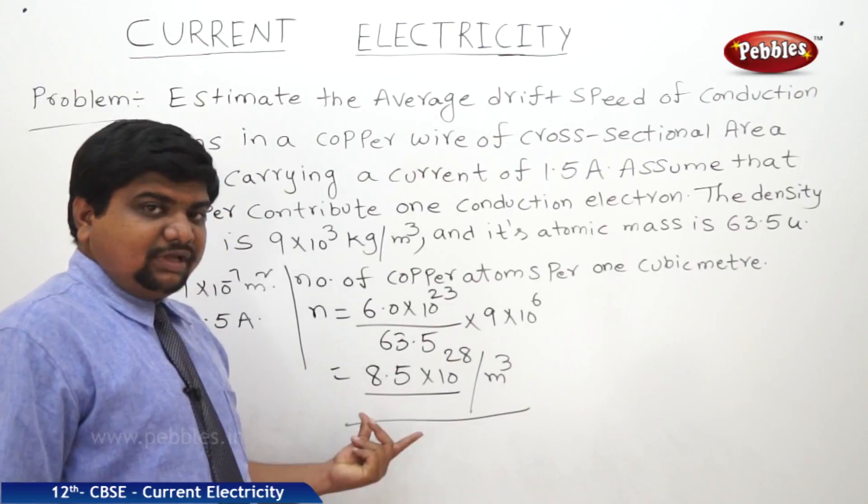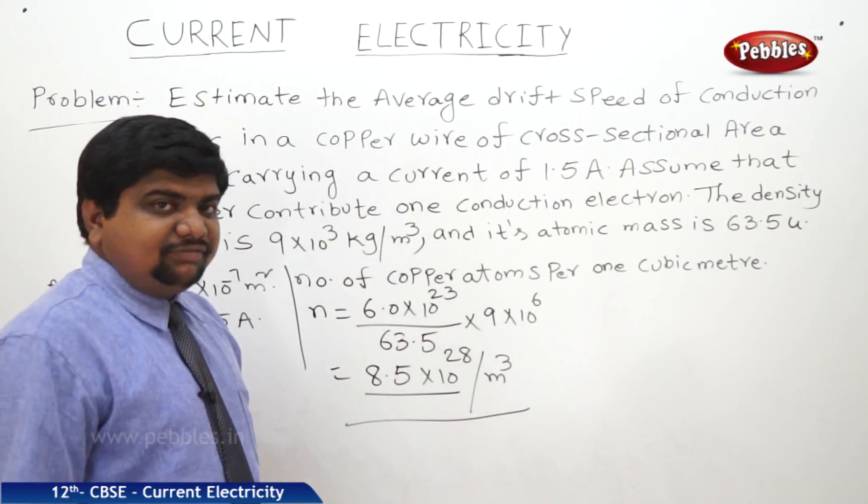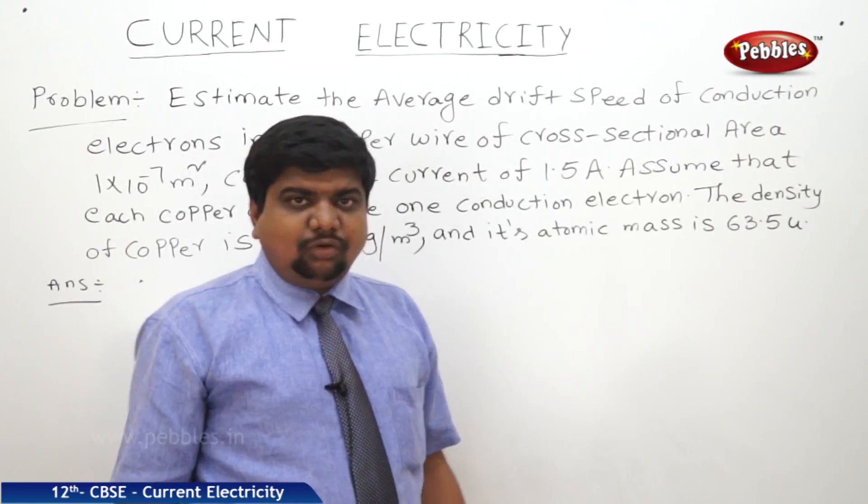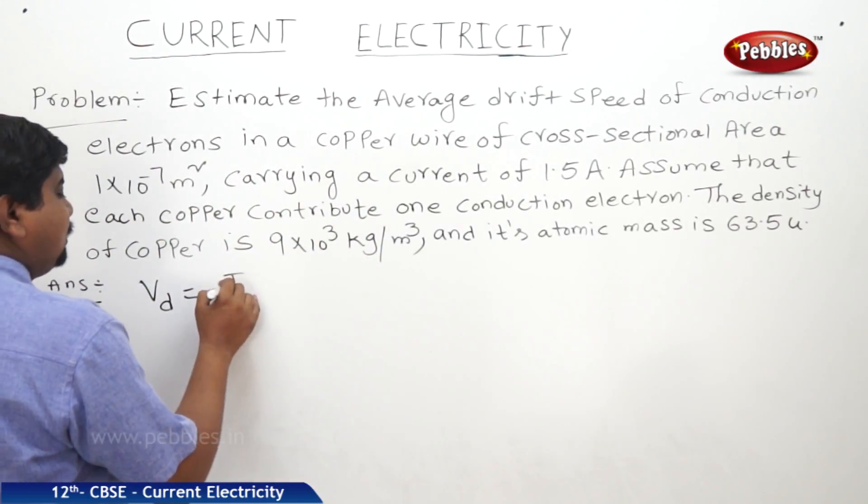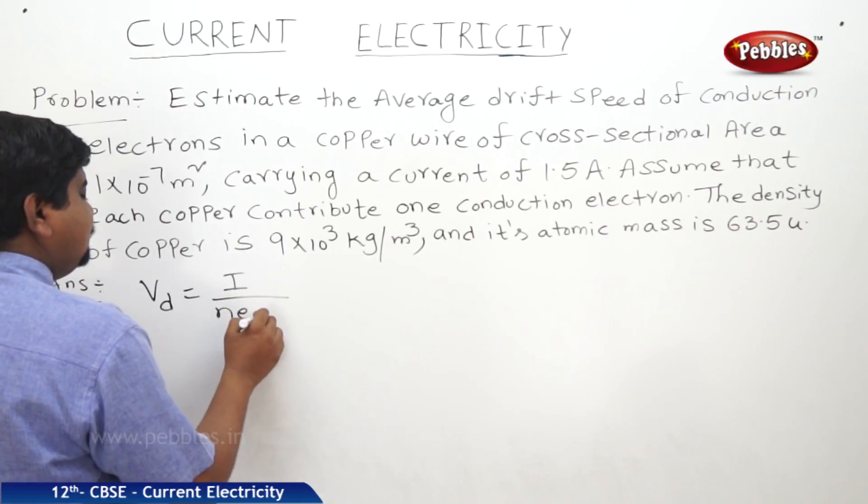Now we are going to use this value to find out the drift speed of the electrons. Now drift speed is equal to, VD is equal to, I by N E A.